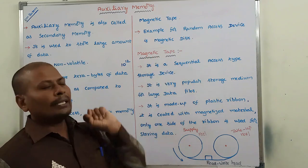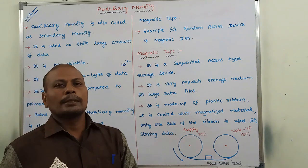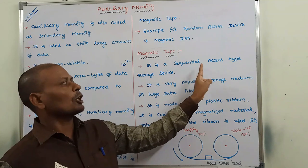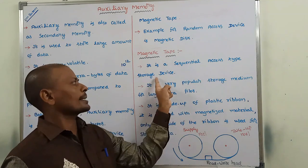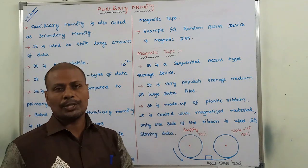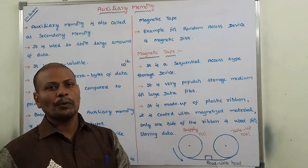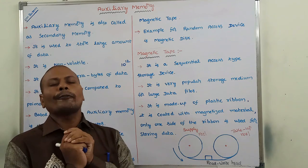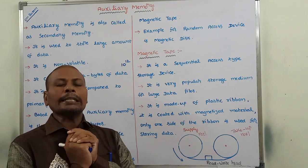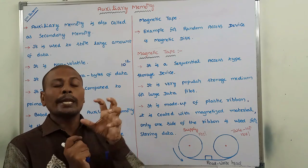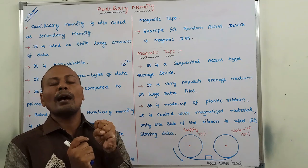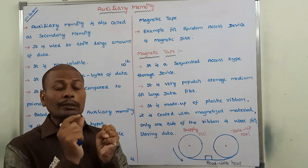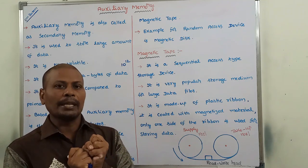In the magnetic tape, the first point is it is a sequential access type storage device. In the case of magnetic tape, we are accessing the data sequentially, not randomly.